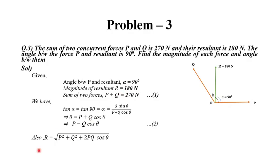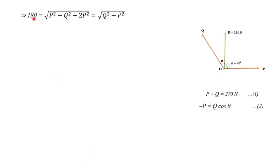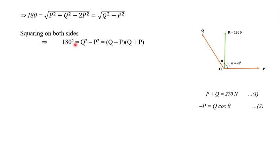Substituting, we get 180 = √(P² + Q² + 2P(−P)), which simplifies to 180 = √(P² + Q² − 2P²) = √(Q² − P²). Squaring both sides: 180² = Q² − P².